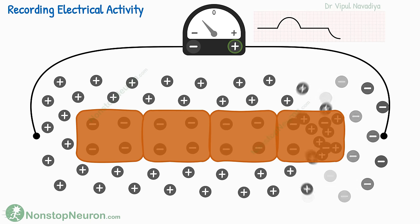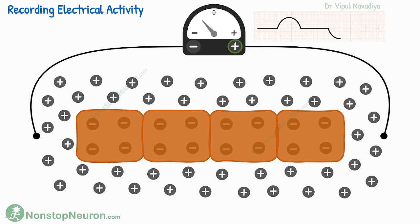As the remaining cells also get repolarized, the potential around those cells also becomes positive. Now again, there is no difference in potential between the two electrodes, so there is no reading and the graph comes back to the zero line. This is how the spread of depolarization or repolarization produces waves.